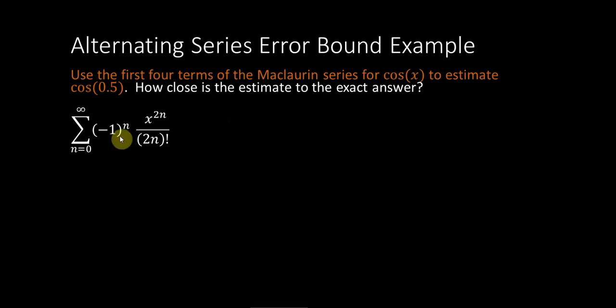A quick review, this is the Maclaurin series for cosine. Cosine, remember, is an even function, so we're looking at all of the even powers. It is going to be alternating, and we have demonstrated, look at the links in the previous videos, that this series converges.